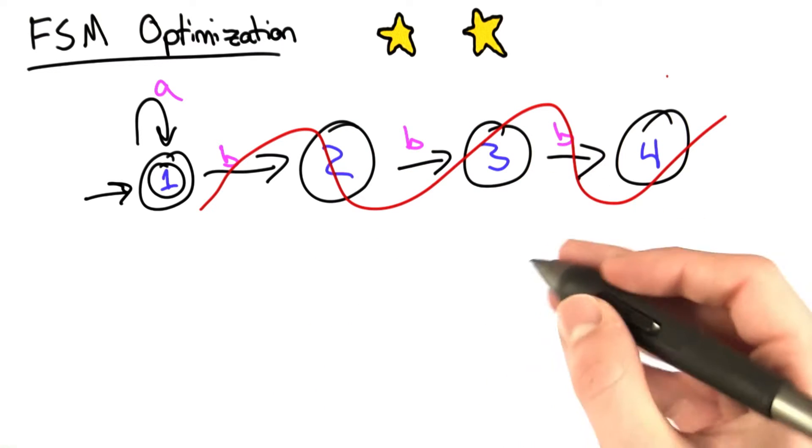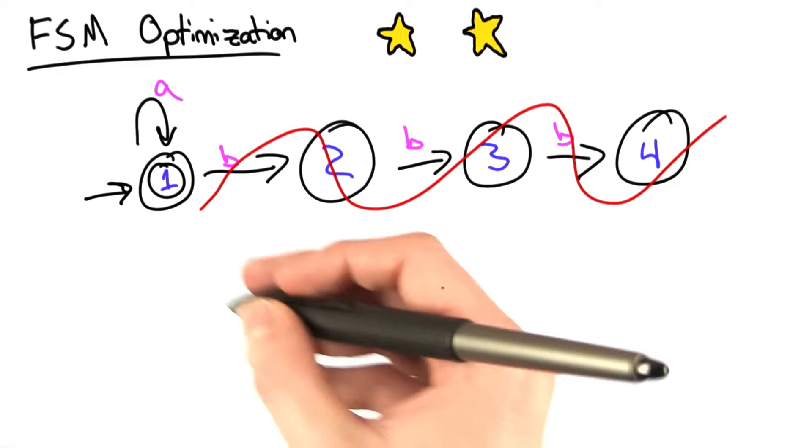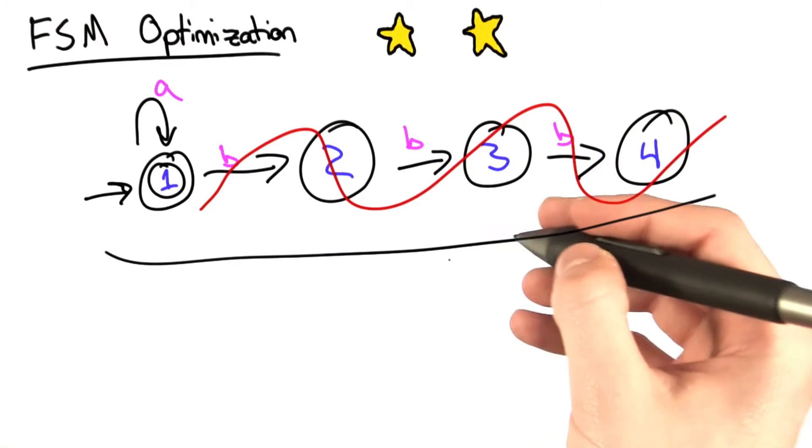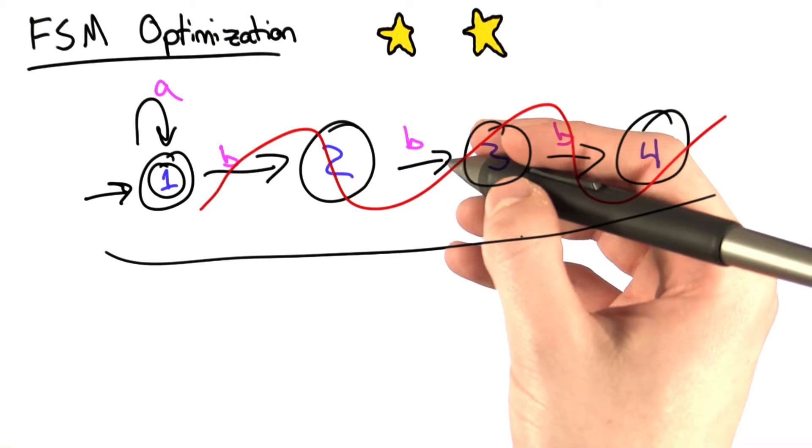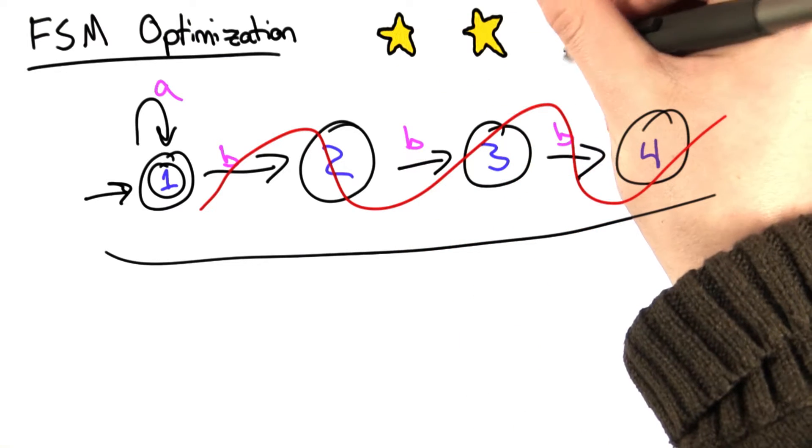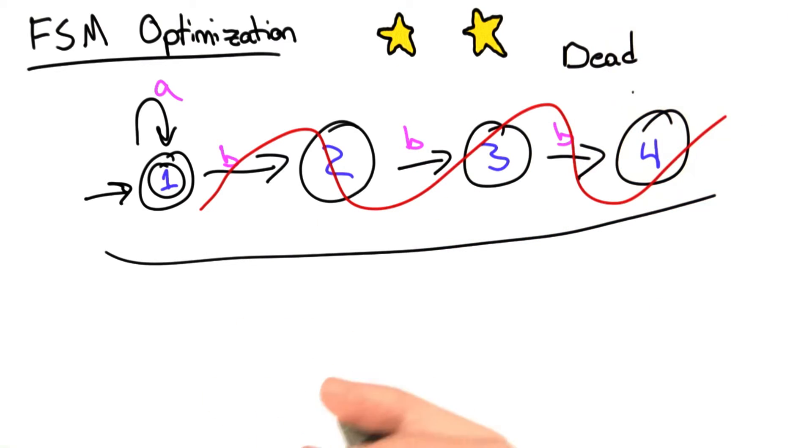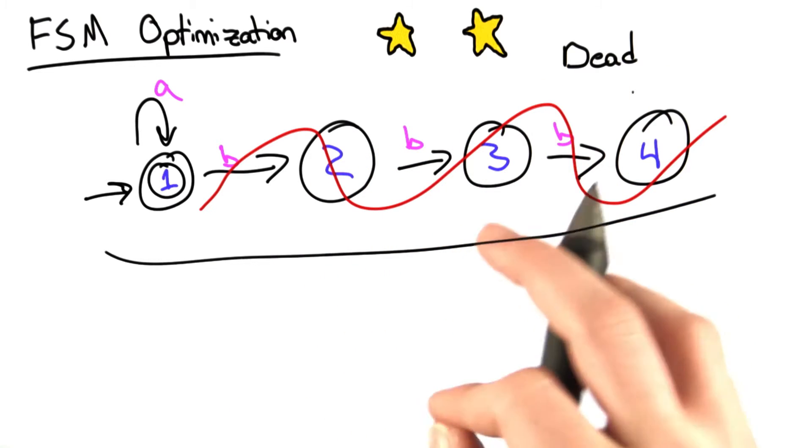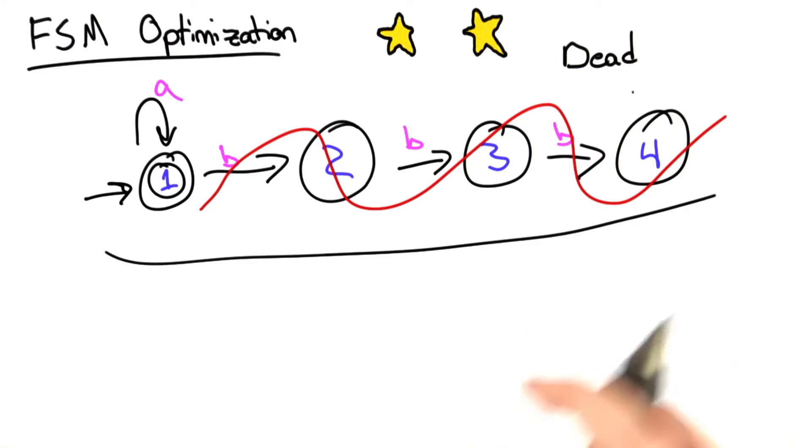So what we're going to do is write code. Given a definition of a finite state machine, like the one that we have here, we're going to identify states that don't matter towards the execution, and we call those dead states, and remove them from the definition while maintaining the exact same language, while recognizing the exact same strings that our finite state machine did before.